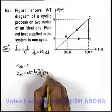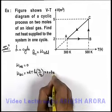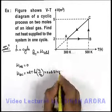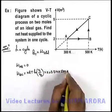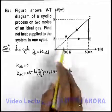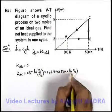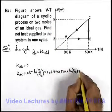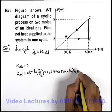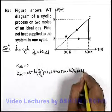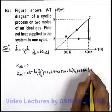So if we substitute the values, that'll be 2 into 8.314 into 500 Kelvin, multiplied by ln of Vc upon Vb, which can be written as 5 by 2. If we simplify this expression, this'll give you 8314 ln of 5 by 2.